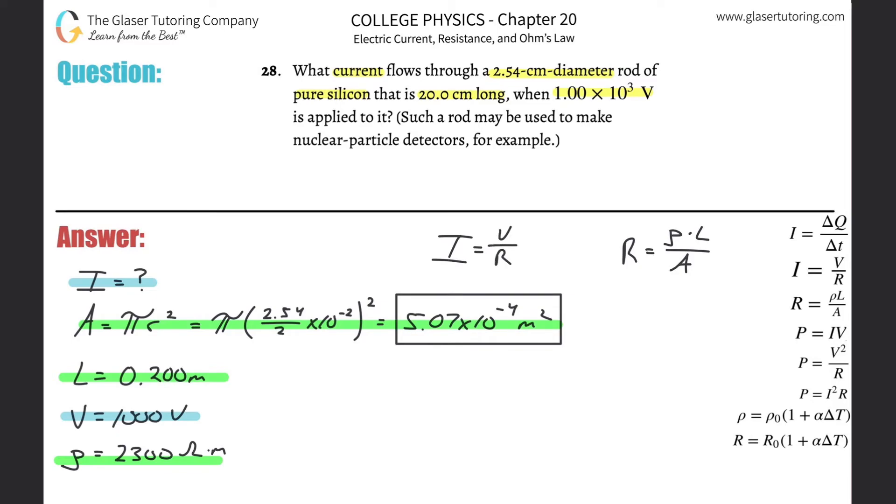Right, right, right, right, right. But wait a minute. If I got to find the current, then I got to know the resistance, right? Because I know the voltage already. They told that to me. So wait a minute. I got to find the resistance. Well, the other formula, I guess.